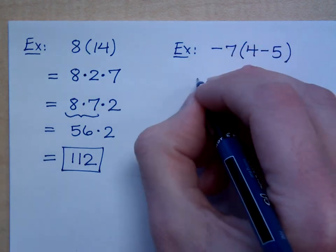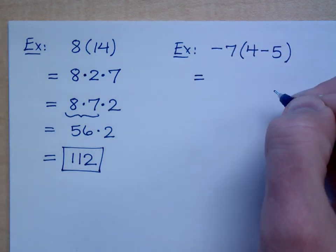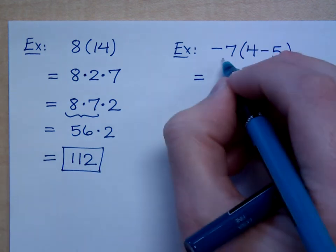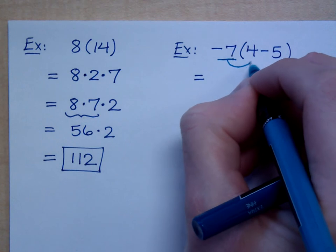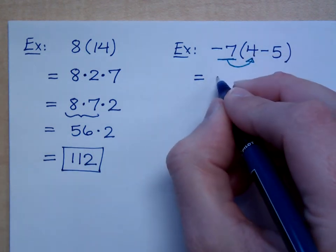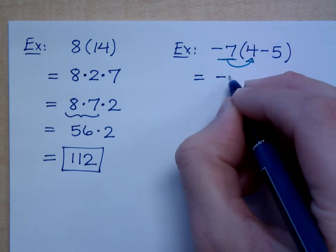If I have negative 7 times 4 minus 5, I want to see what this would be if you distribute. If you distribute, what do you get? Negative 7 times 4 is what? Negative 28. Negative 28.